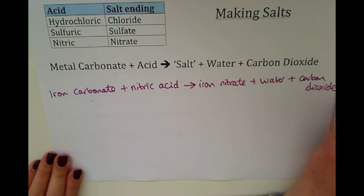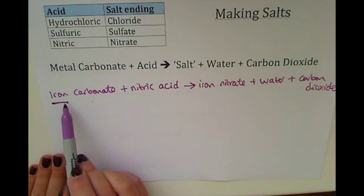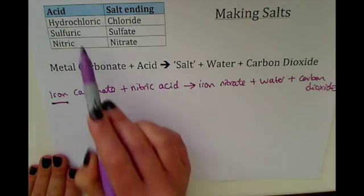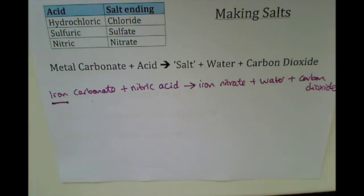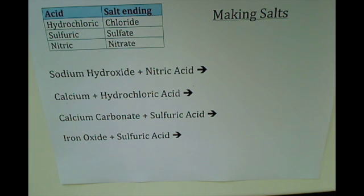Naming salts is actually pretty easy once you follow the rule of using the name of the metal, looking at what acid you're using, and deciding whether it's a chloride, a sulfate, or a nitrate. Here's your chance to have a go at a few of those equations — try to complete the word equations and then come back and see if you've got the answers right, so pause the video now.